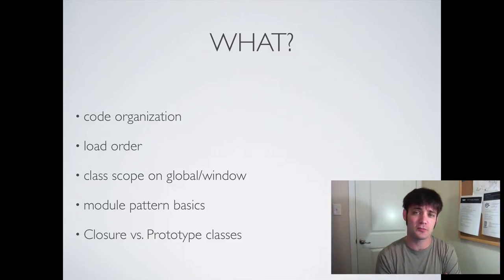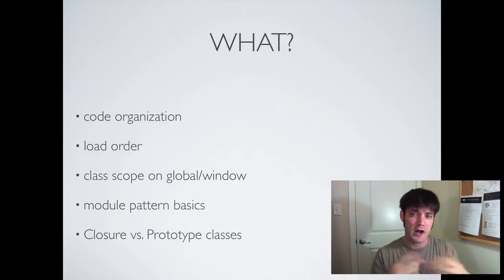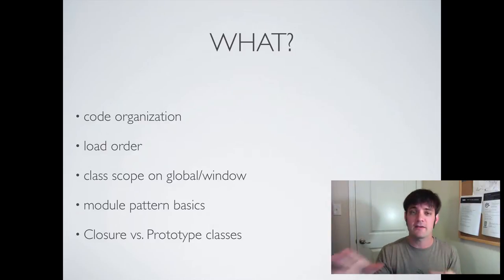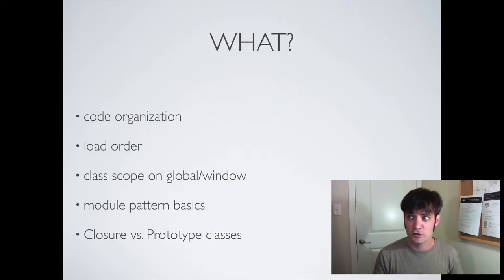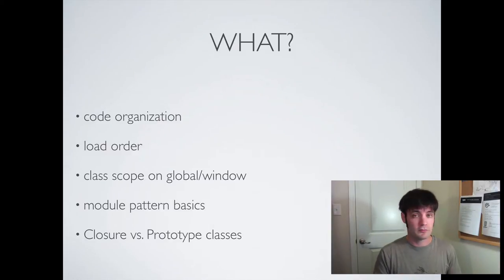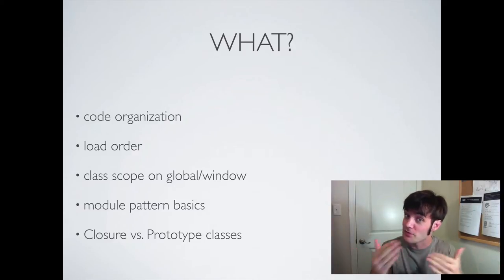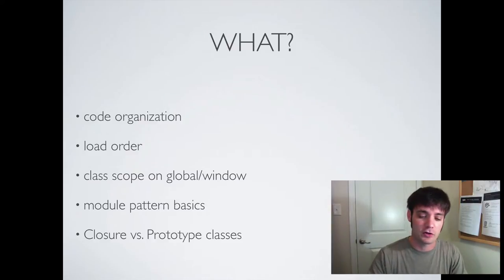We're also going to talk about the module pattern basics, which helps solve that problem. Most of the ways developers utilize the module pattern is to house classes in a clean way without polluting global — you can portably put it in your project and it doesn't pollute the namespace. You can also easily unit test it. Modules allow you to do a lot of things without putting things on global, which promotes good practices. Global variables are bad. Lastly, we're going to cover closure classes versus prototype — a taste of how the two ways differ and why you should consider closures.